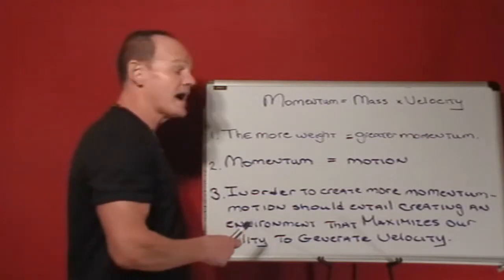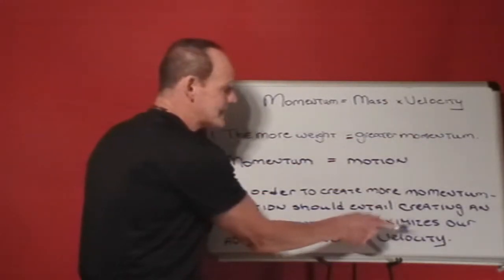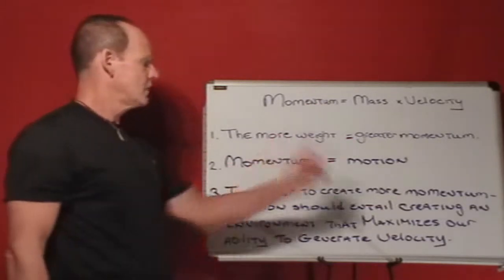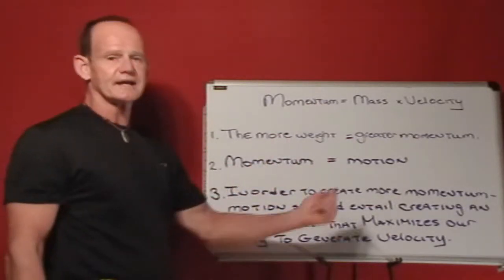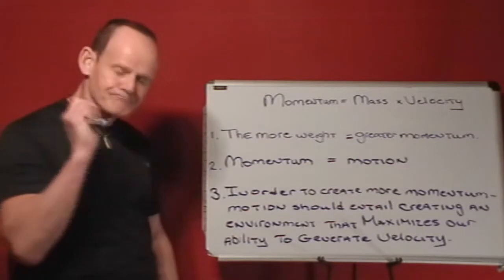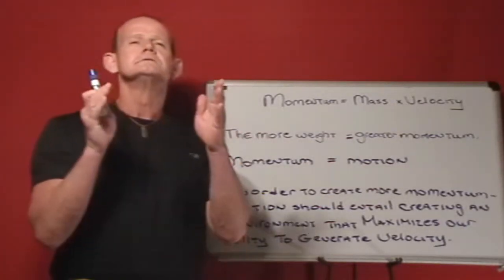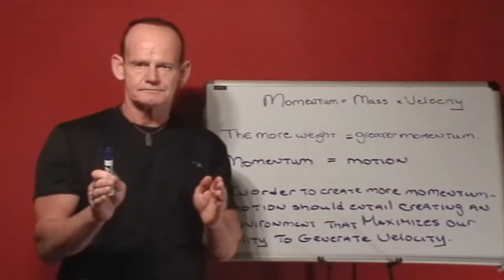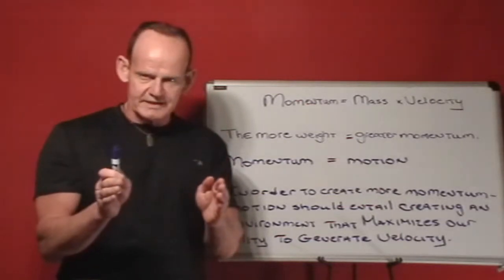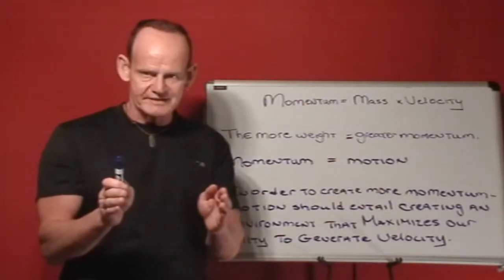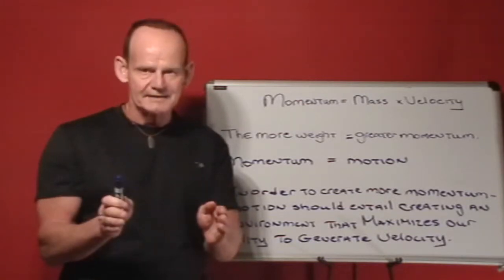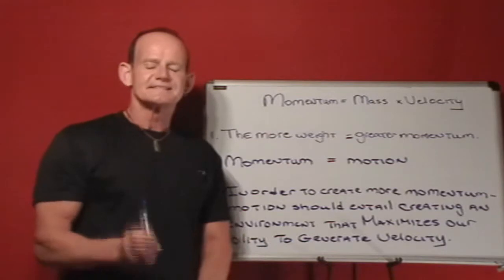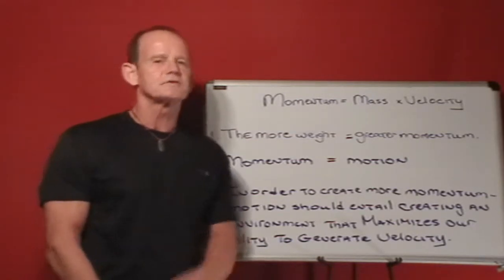Point number three: in order to create more momentum, motion should entail creating an environment that maximizes — maximize being the key word — our ability to generate velocity. The key to gaining momentum is our ability to neutralize gravity and make an ally out of inertia.